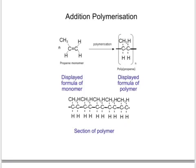And when we look at a section of the polymer, we can see that every other carbon has got a CH3 attached to it, just as if this displayed formula on the right-hand side has been made into a rubber stamp, and it's been stamped next to each other.